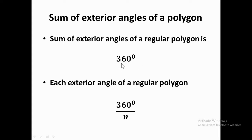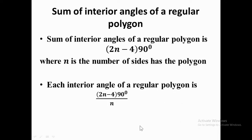Since the sum of exterior angles of any polygon is 360 degrees, to find each exterior angle you divide 360 by the number of sides n. So each exterior angle = 360° ÷ n. This is the formula for finding each exterior angle of a polygon. Remember: sum of exterior angles = 360°, and sum of interior angles = (2n − 4) × 90°.